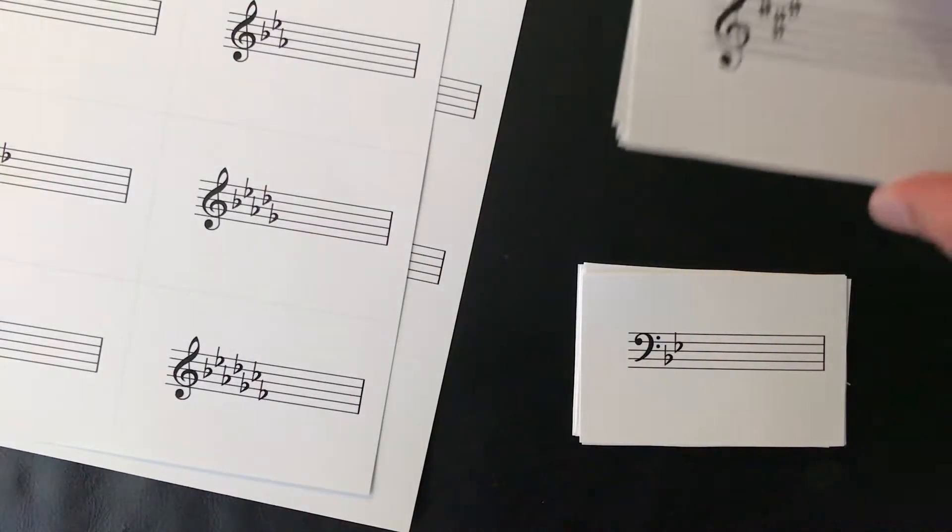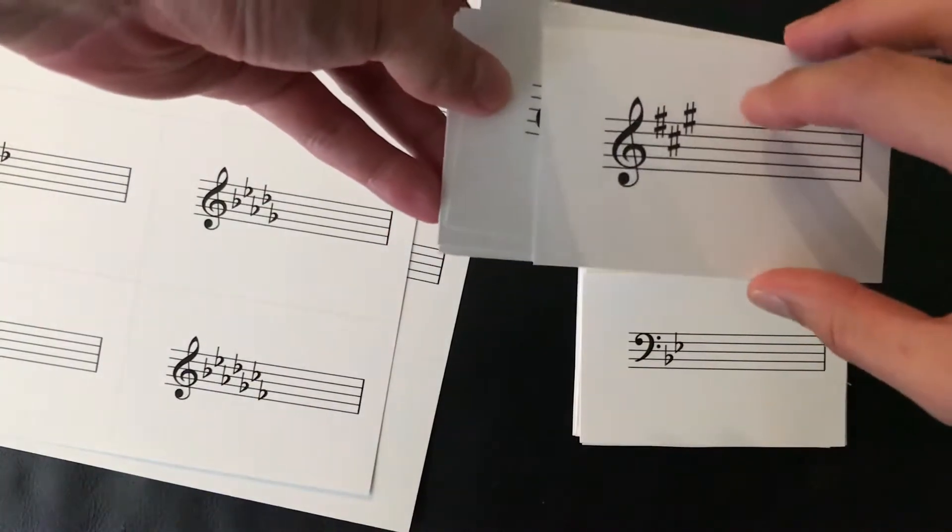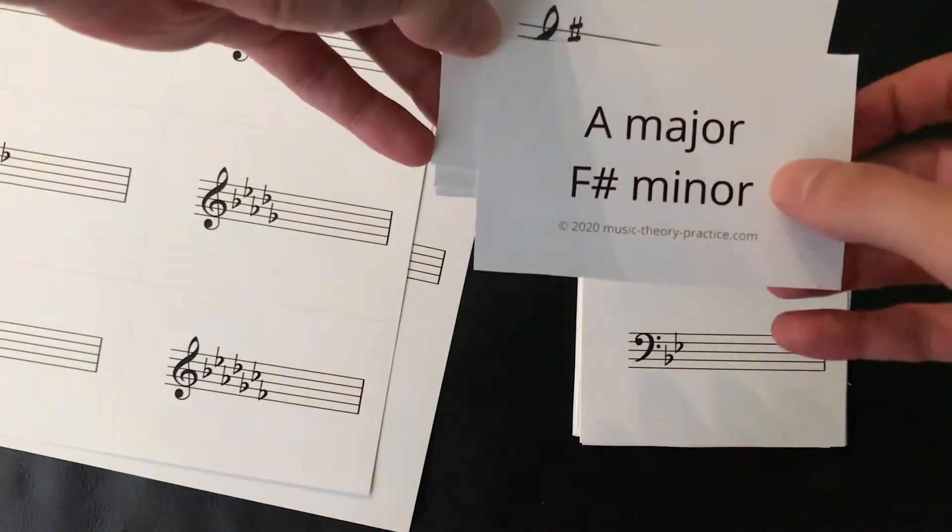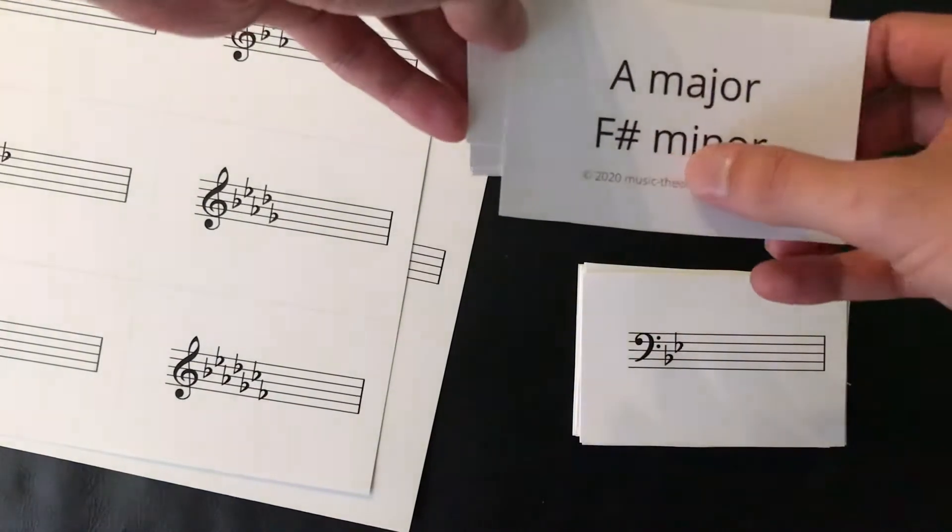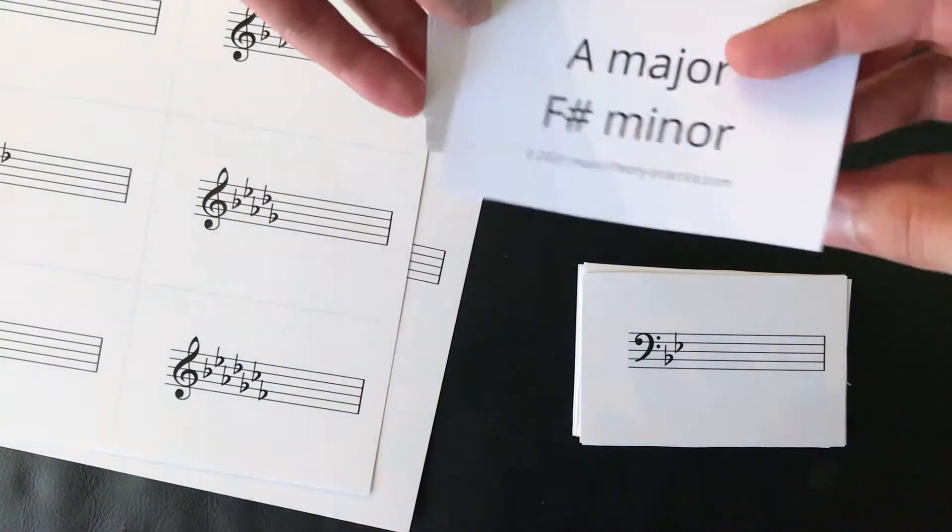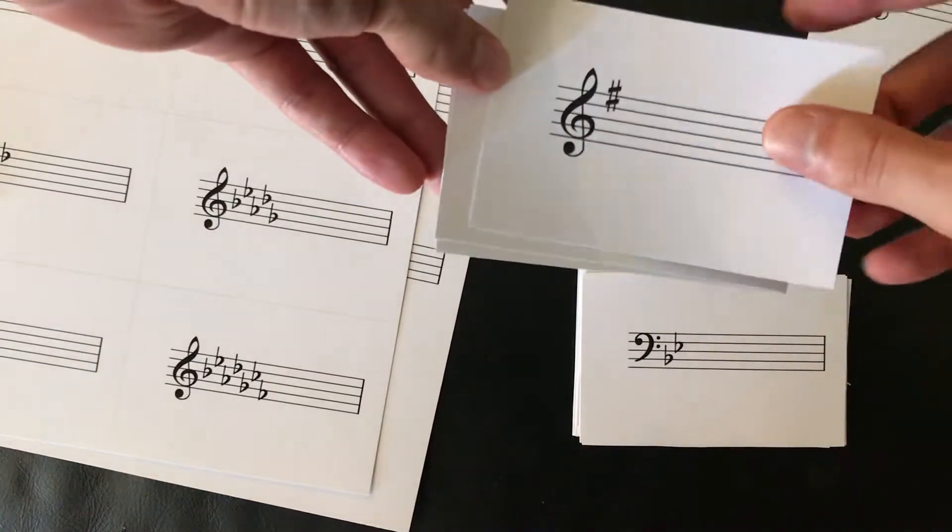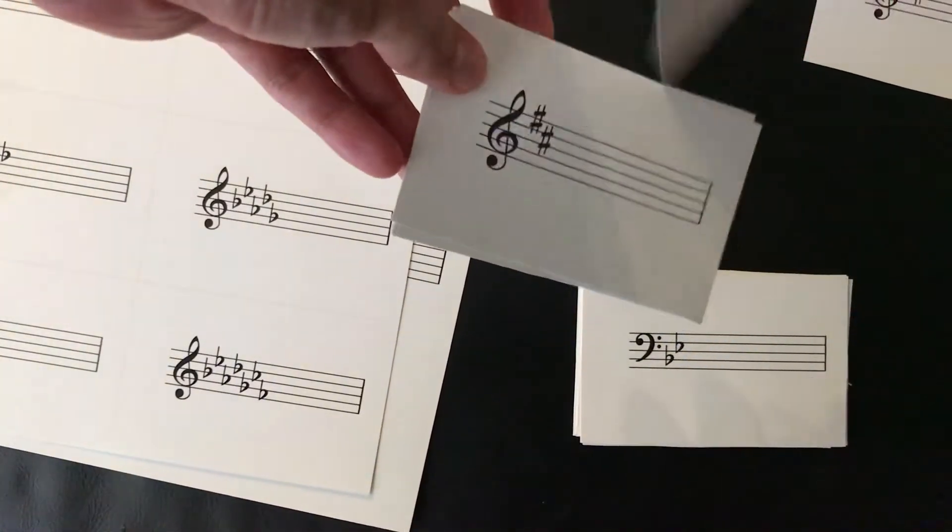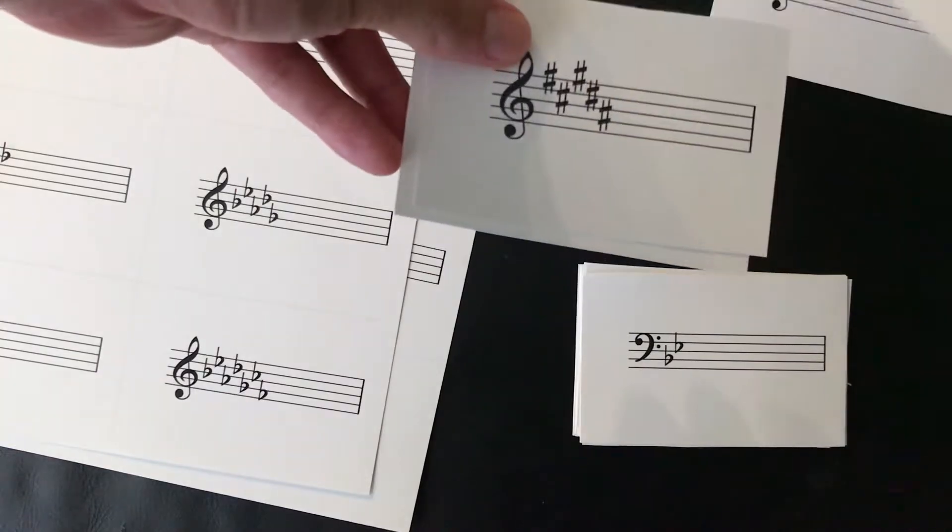And here's what they look like when they are cut out. Here's A, of course, and you'll notice on the back it has the major and minor keys on them. Here's G or E minor, right? So on.